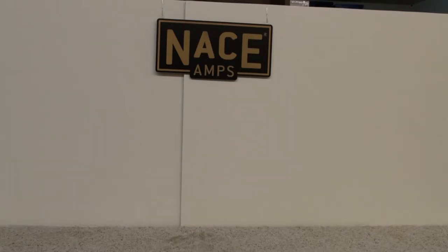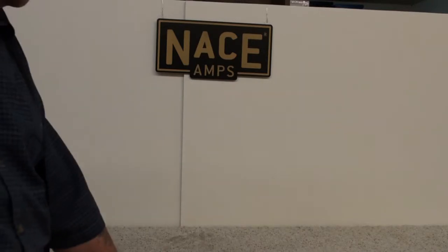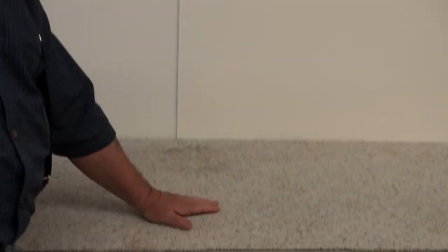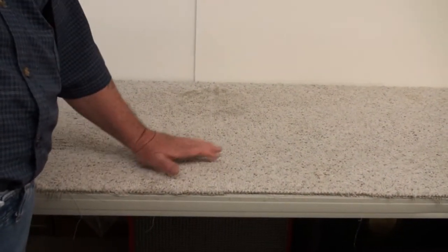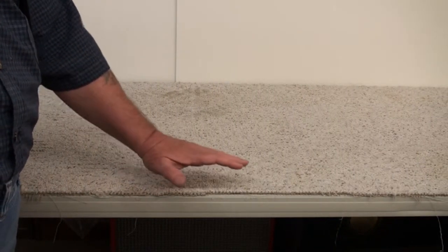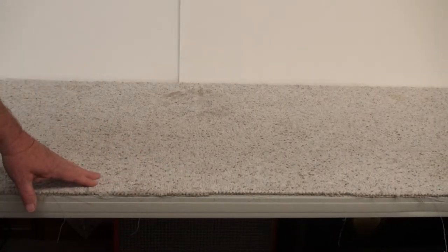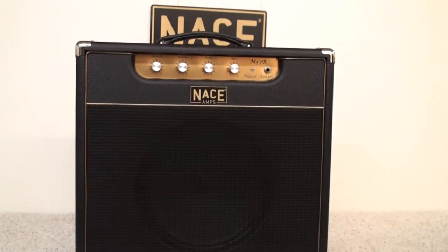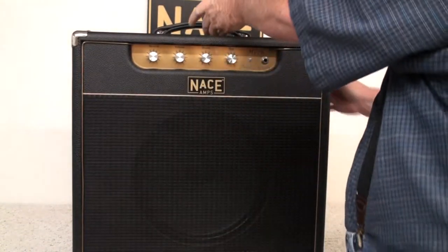First thing you want to do is make sure that you have a surface that has something like this carpeting. You can put a really nice fat towel on. We want to be able to protect whatever table you're going to put the amp on and also to protect the tolex of the unit itself. So now let me get the amplifier, and we're going to use this as our first example. First thing we want to do is get it turned around.